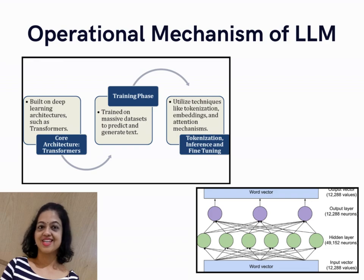The arrows in the diagram indicate the flow of development — from creating the architecture, to training the model, and finally deploying it with practical techniques.